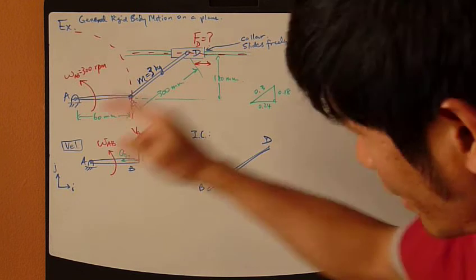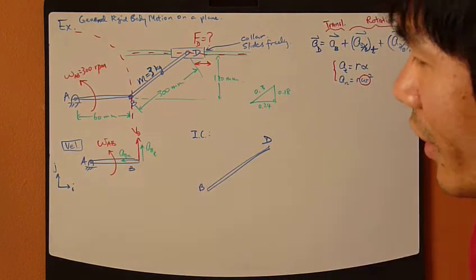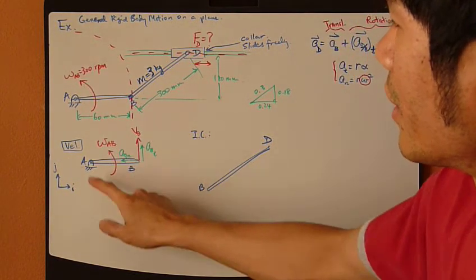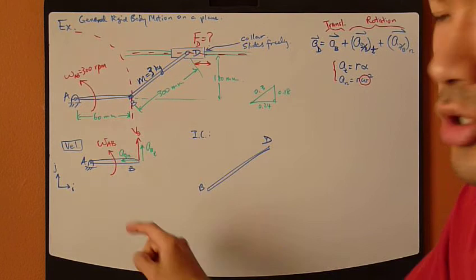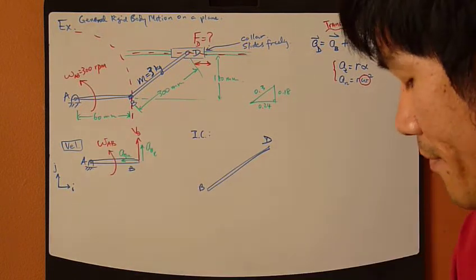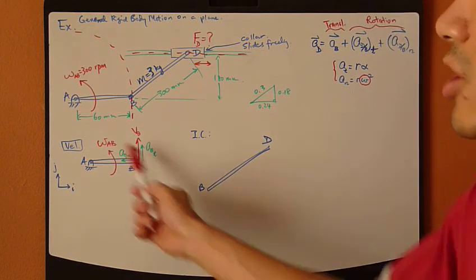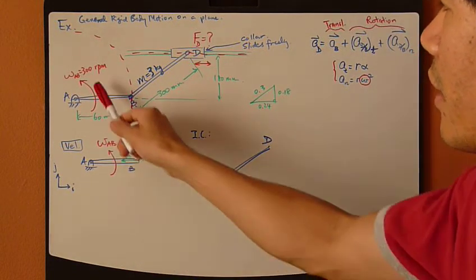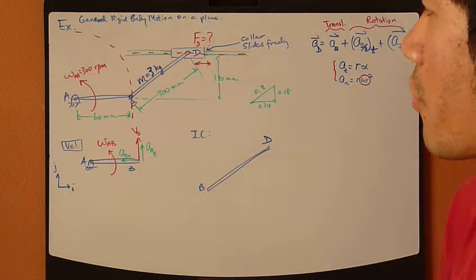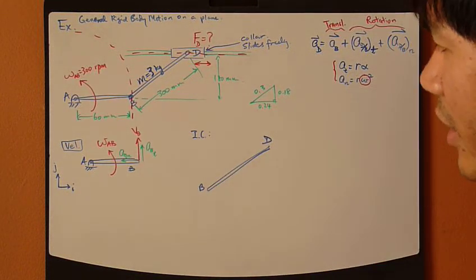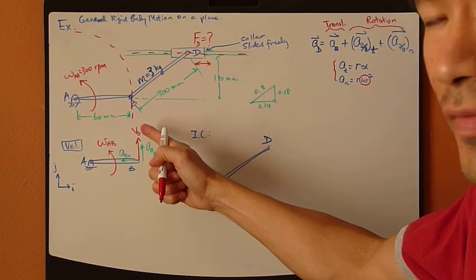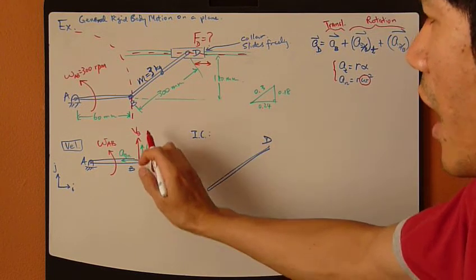So, let's first look at velocity. Let's first look at this link AB, which is rotating about point A. So, it's pure rotation about point A. Now, omega AB is given at 300 RPM. So, velocity of B goes straight up, vertically up.